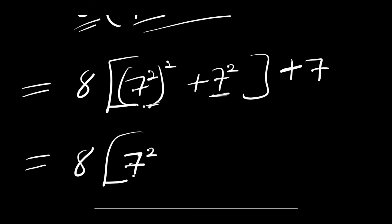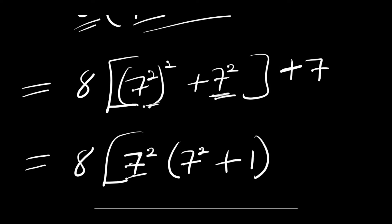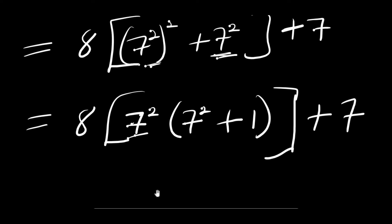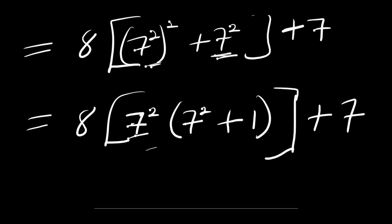...times another 7 power 2. Then if you divide 7 power 2 by 7 power 2 you are going to have 1. So inside the bracket we have (7 power 2 plus 1), then you have plus 7. If you multiply this out you will get what we have right here.